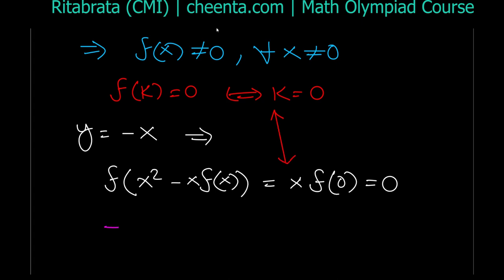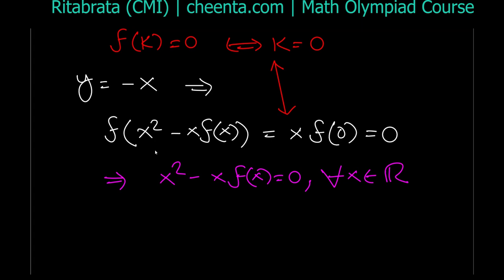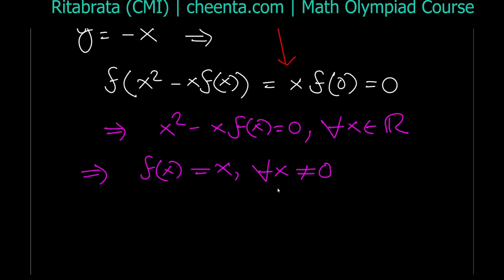So we get f(x² − x·f(x)) = 0. By our assumption, f of something equals zero implies that something must be zero. So this forces x² − x·f(x) = 0 for all real x. From here, for x ≠ 0 we can cancel x and get f(x) = x.